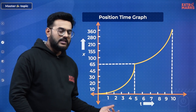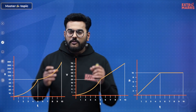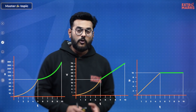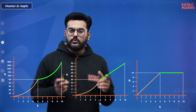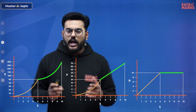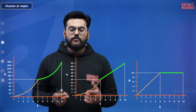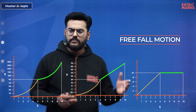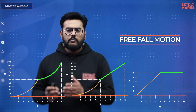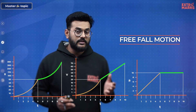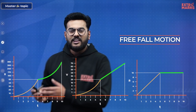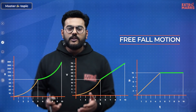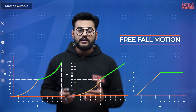Now I want to bring all the curves together — the XT curve, the VT curve, and the AT curve — and focus towards the second half, from T = 5 to T = 10 seconds. What you're actually seeing is a representation of free-fall motion. In free-fall, acceleration equals 10 m/s² (approximately 9.8 m/s²). So the AT graph is constant, velocity changes linearly, and position changes parabolically — that's how free-fall motion is graphically represented.